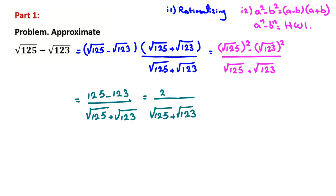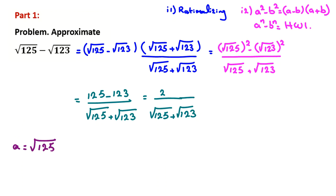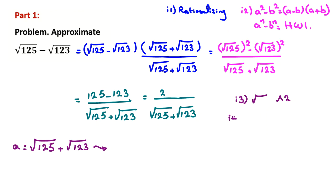Now I let A equal the denominator: A = √(1/5) plus √(1/3). When we have a square root or nth root, one approach is to raise to the power of 2 (or n). Here, if we raise to the power of 2, we apply the identity (A + B)² = A² + B² + 2AB.